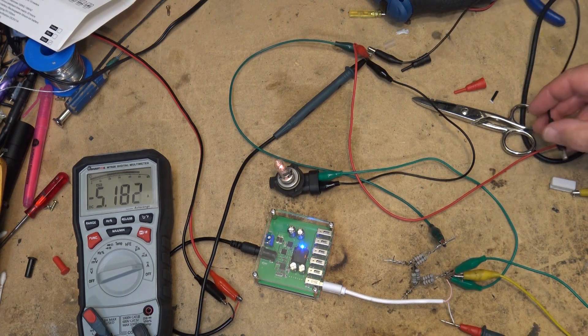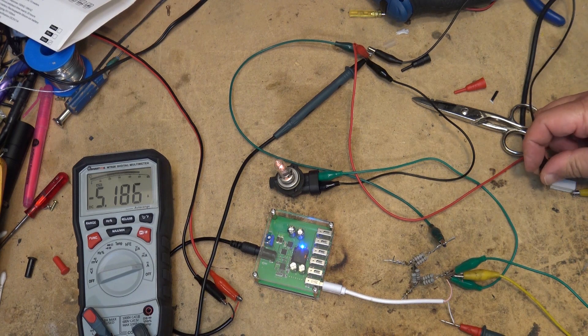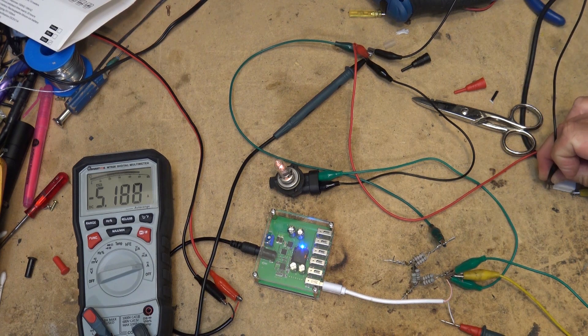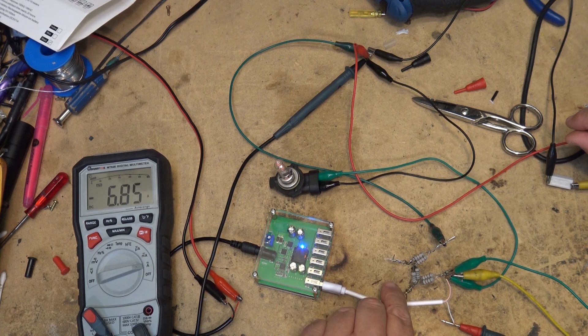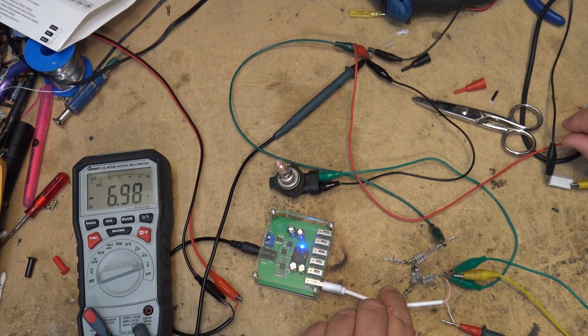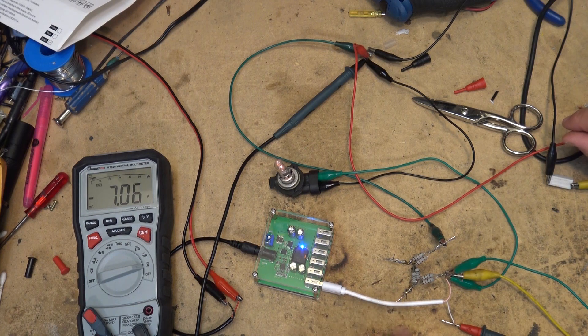Oh, one of my wires fell off here and the current dropped. Let's just reconnect this one. There, now we're drawing 6.8 amps. It's almost 7 amps. There, we got 7 amps going.